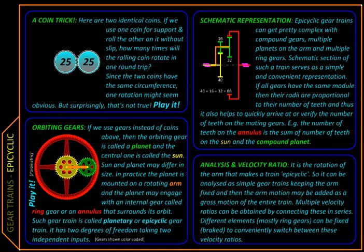So far we have seen simple and compound gear trains where the axis of all the gears were fixed. Now we are going to look at gear trains where the axis will be moving or orbiting in space around other gears. And just to show you how dramatically different the results are going to be, here is a simple coin trick.